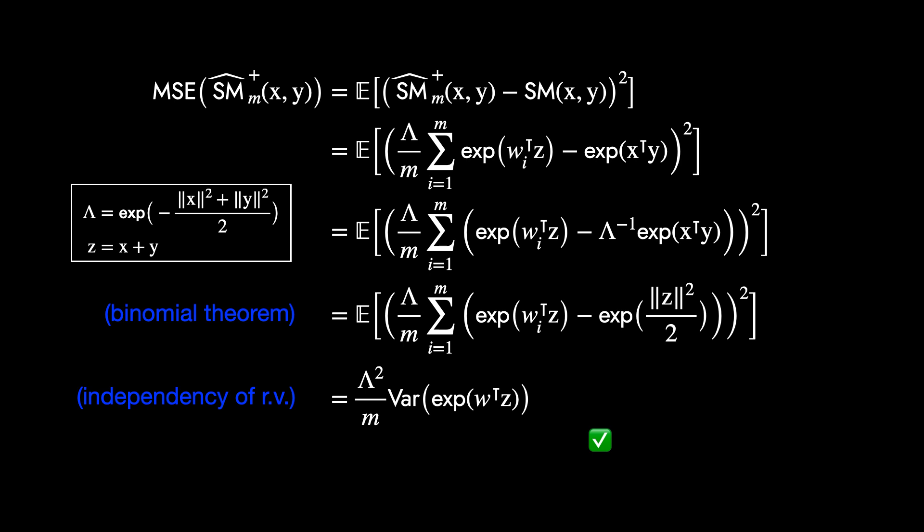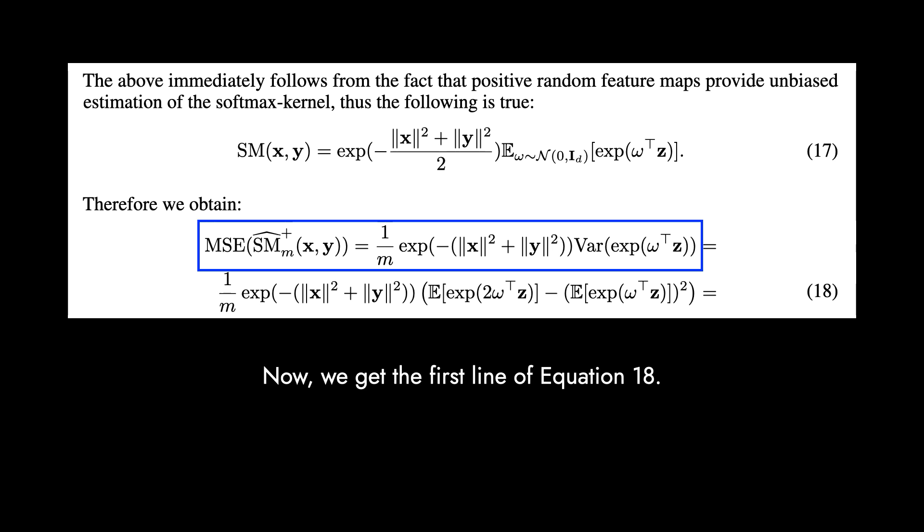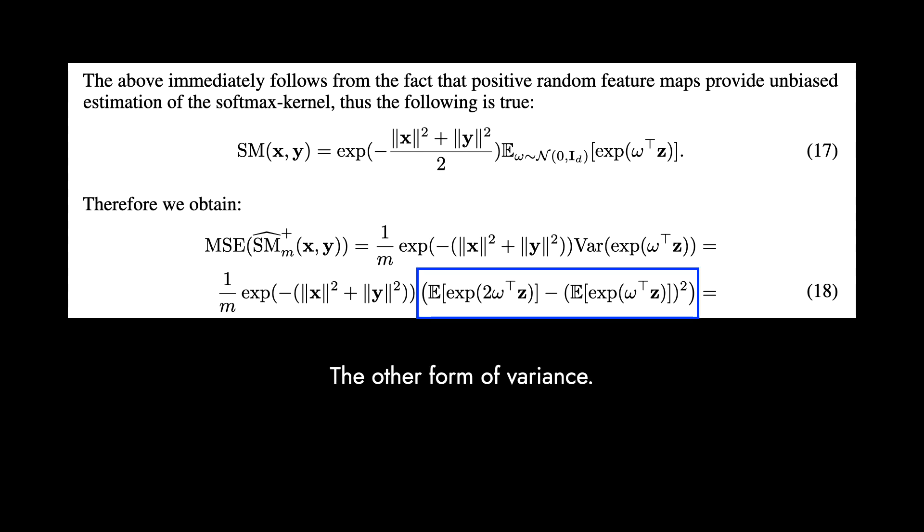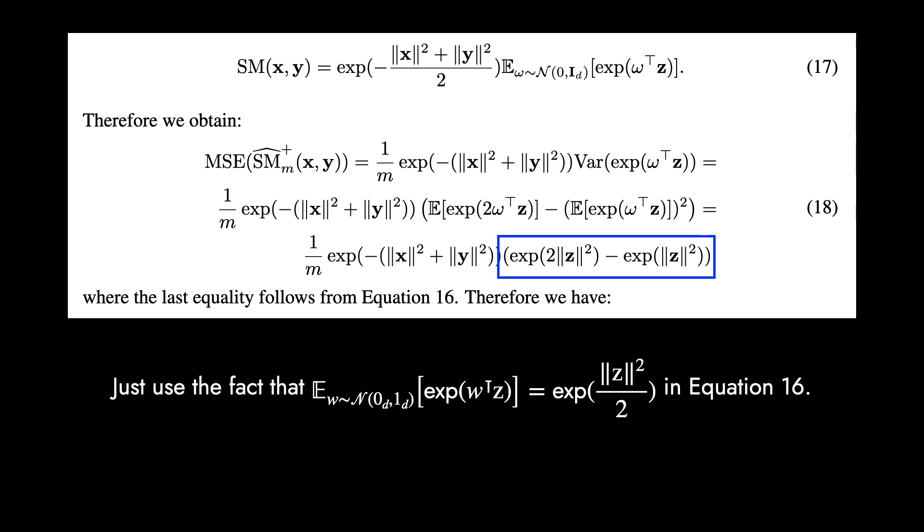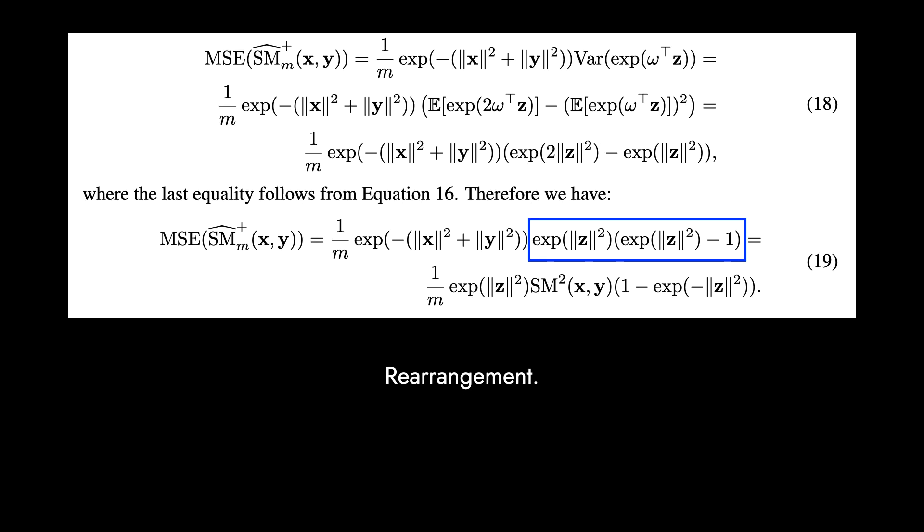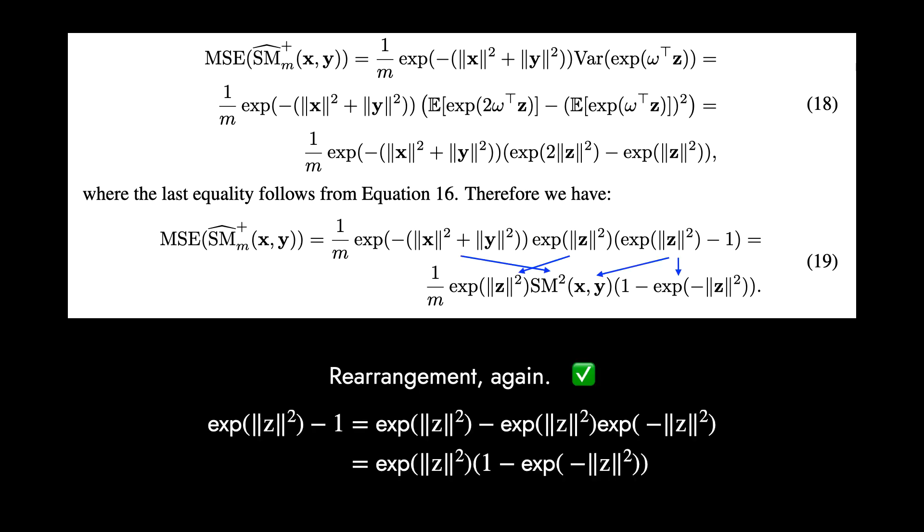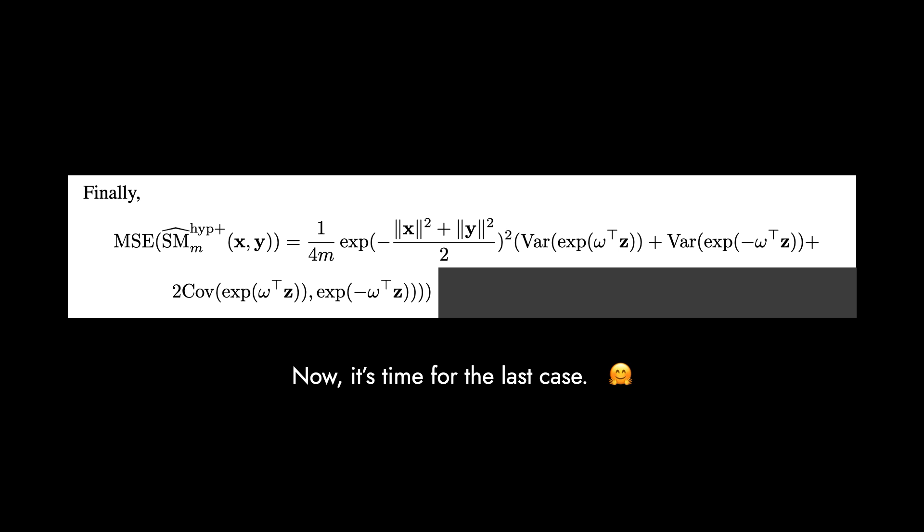Here we can confirm that the second method is obviously the unbiased estimation of the softmax kernel. To get the next equation, number 18, we arrange with a variance term with a similar approach. Now, luckily, we have a simple form. Now we get the first line of equation 18. The blue box is the other form of variance. We can rewrite using equation 16 again. A simple rearrangement with the property of exponential. Now it's time to rearrange to make the function of SM. Please refer to the fact in this slide. Now it's time for the last case.